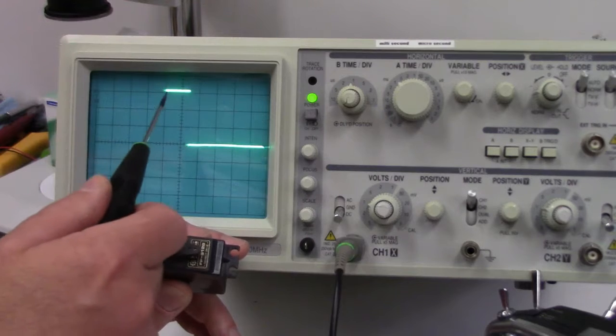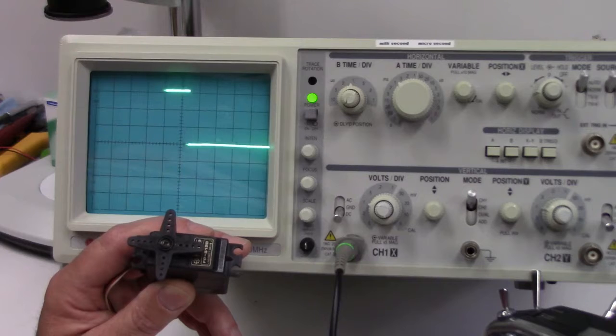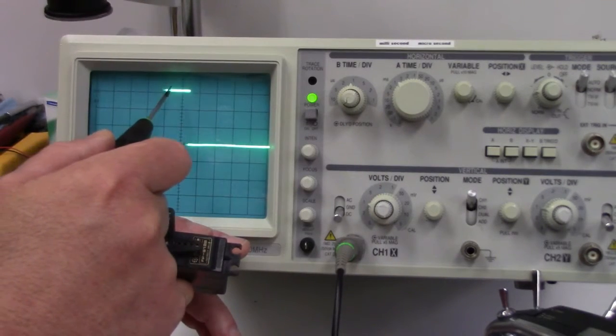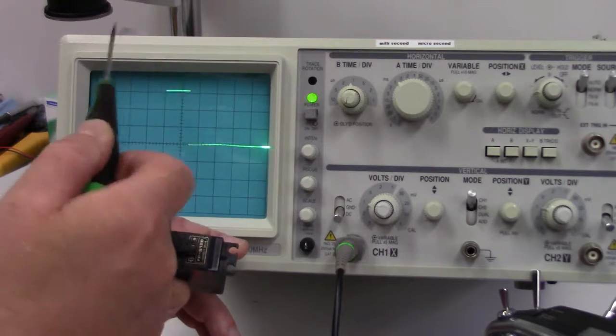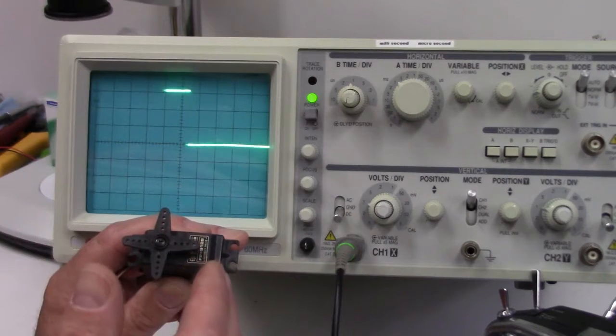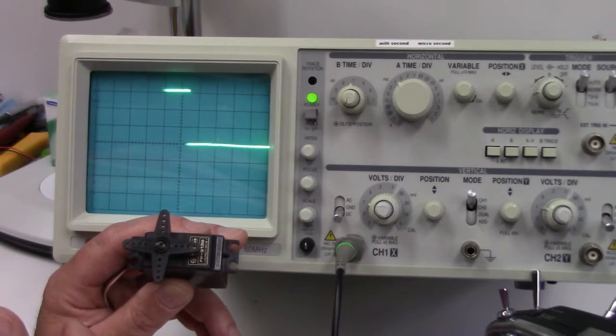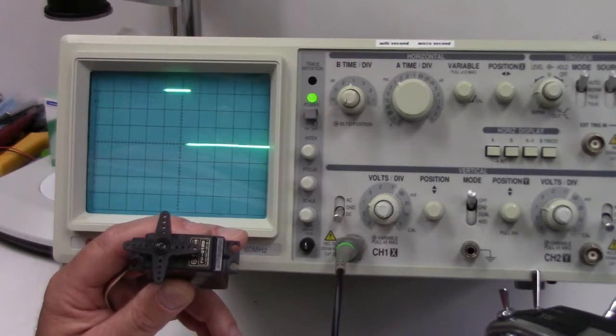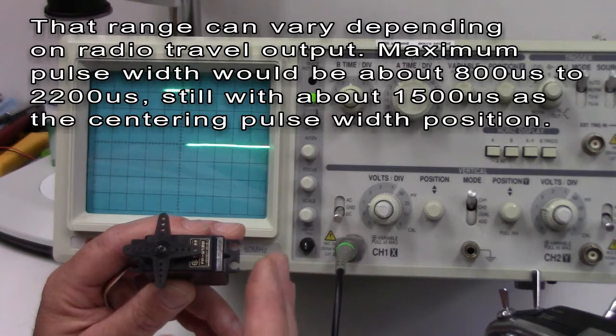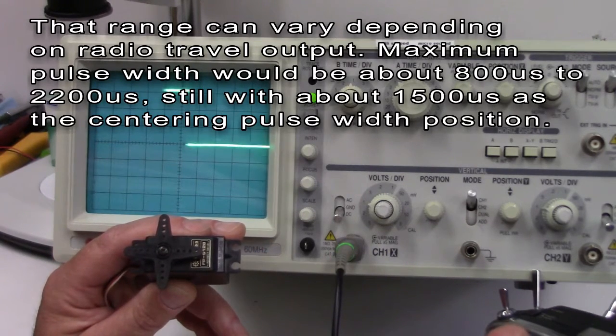So if this is, right now our stick is centered, our servo is centered, so we would expect to see roughly 1500 microseconds. So there's 1,000 and a half, so 1,500. Remember, we're at 1 ms per division. So that would be 1.5 ms or 1,500 microseconds. And on my page, as I explained, servo travel range is generally anywhere from 1,000 to 2,000 microseconds. So 1,000 would be full rotation one direction, 1,500 centered, and 2,000 would be full travel in the other direction.